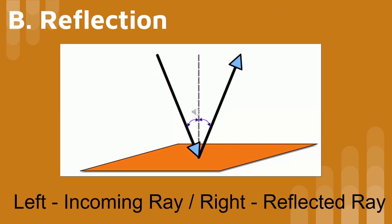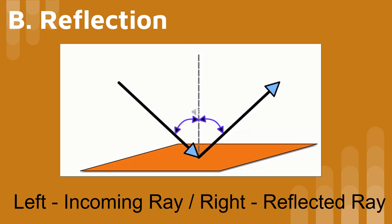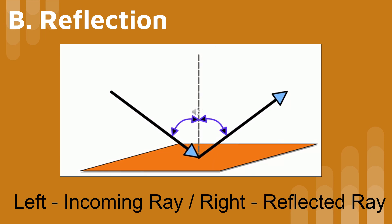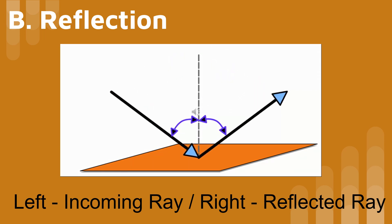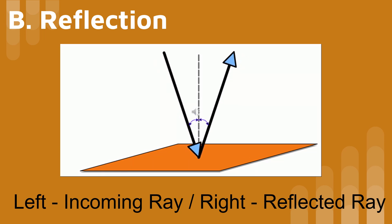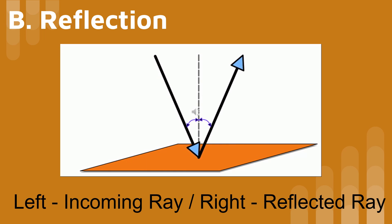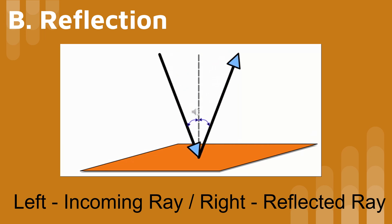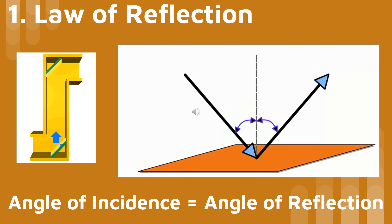In the next part of this presentation, we are going to look at how light reflects off a surface. The left ray in this animation is called the incoming ray, and the right ray is called the reflected ray. Notice that the angle that the incoming ray makes with the dotted line is equal to the angle that the reflected ray makes with the dotted line. The dotted line is called the normal. The normal is always drawn perpendicular to the reflecting surface. The law of reflection states that the angle of incidence equals the angle of reflection.